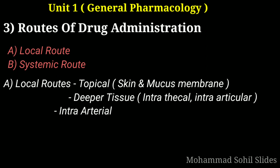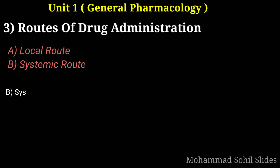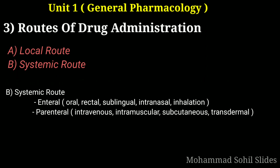Then the second type is systemic route. In systemic route there are two types: enteral and parenteral. Under enteral there are various types: oral route, rectal route, sublingual route, intranasal route, and inhalation. Under parenteral there are four types: intravenous, intramuscular, subcutaneous, and transdermal. So these are the classifications of route of drug administration.